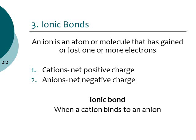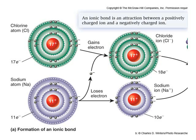Here we have an example of an ionic bond with chlorine (the green atom) and sodium (the purplish atom). The sodium atom loses an electron, causing it to become positive in charge. That electron goes to the chlorine atom, so chlorine gains an electron and becomes negative. Then the positive sodium and negative chloride attract each other, forming the ionic bond.